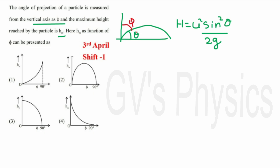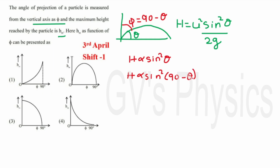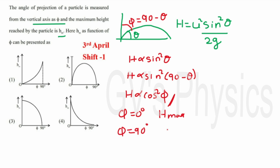We need the relation between θ and φ. Both are complementary angles, so 90 − θ = φ. We know h is proportional to sin²θ, but we need it with respect to the vertical axis. So h ∝ sin²(90 − θ) = cos²θ, and substituting φ we get h ∝ cos²φ. For the cosine function, when φ = 0° cos0 = 1 so height is maximum, and when φ = 90° cos90 = 0 so height goes to 0. Looking at option 3: when angle is 0° height is maximum and when angle is 90° height is 0. Option 3 is the right answer.